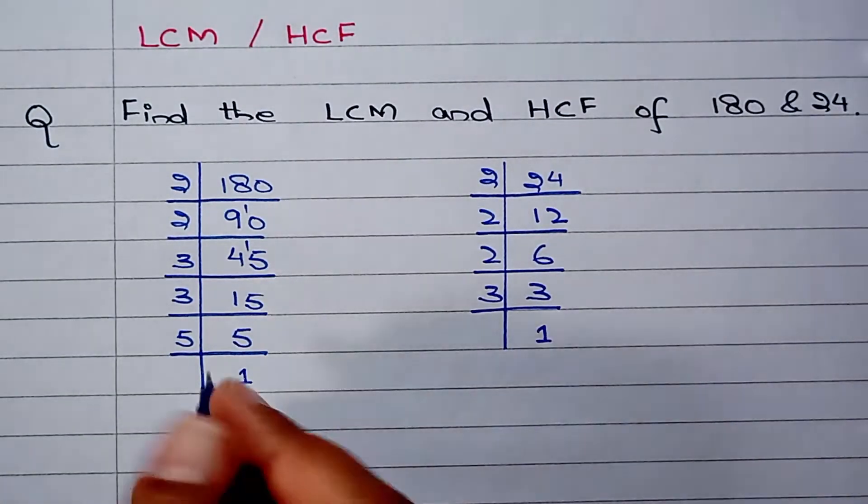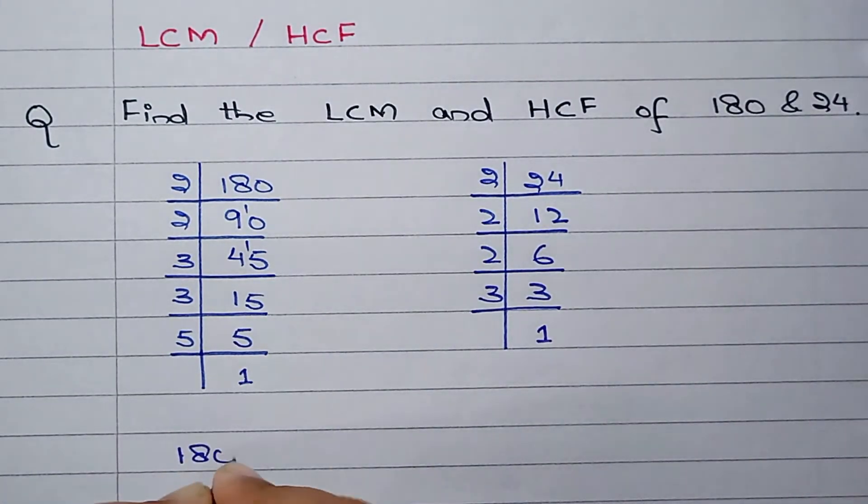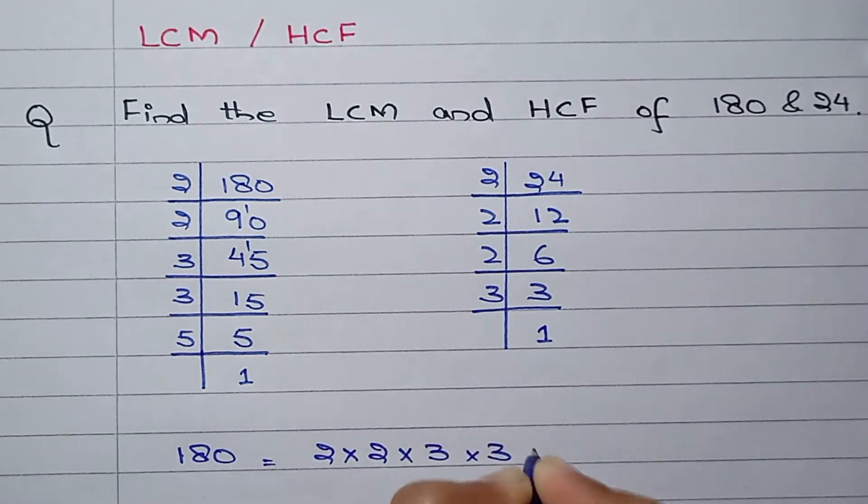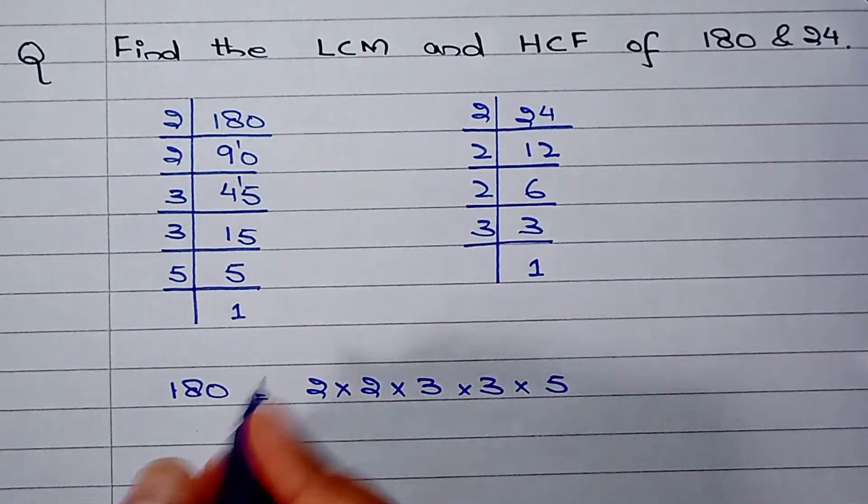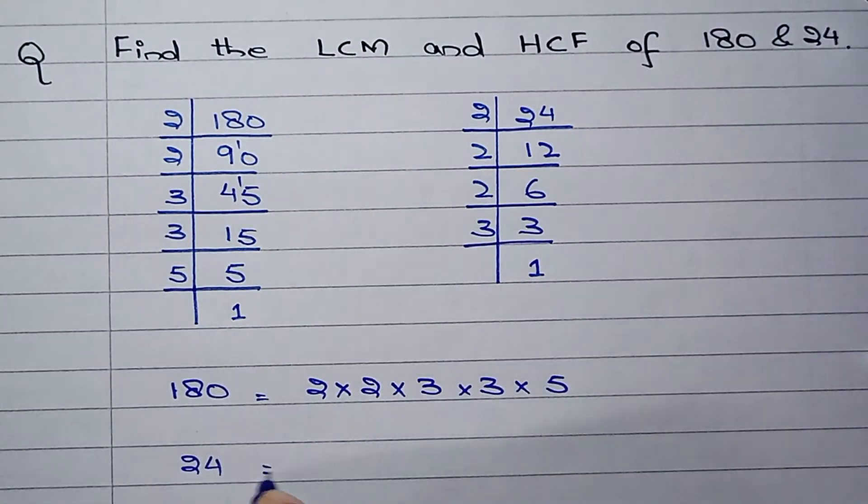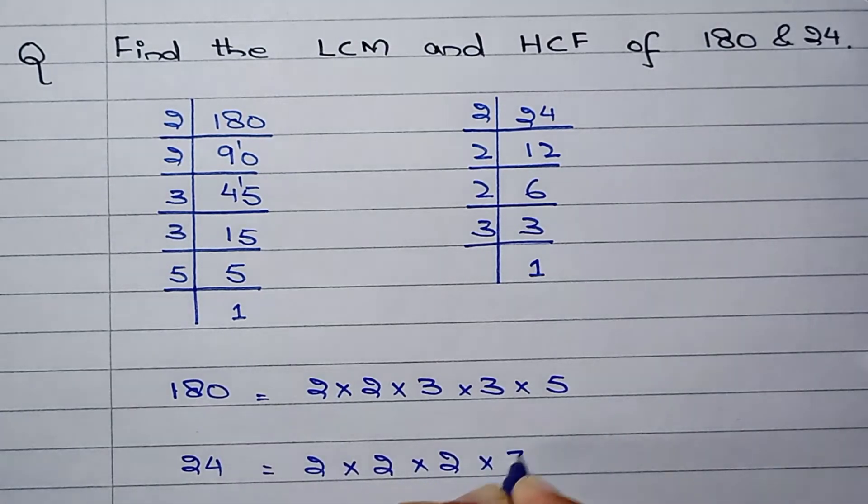Let me write down the prime factors. For 180 it is 2 times 2 times 3 times 3 times 5. And the prime factors for 24 we have 2 times 2 times 3.